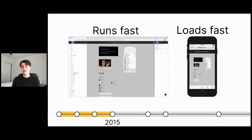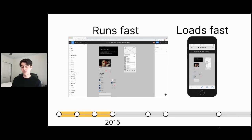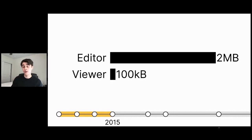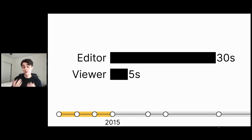The difference in the code generated was not subtle. The code from the editor after compression — the amount you have to download onto your phone — was about two megabytes, versus about 100 kilobytes for the viewer. That dramatic difference translated very directly into performance changes: on mobile, the editor would take about 30 seconds to load a file whereas the viewer would take only five. The experiential difference between those is dramatic.